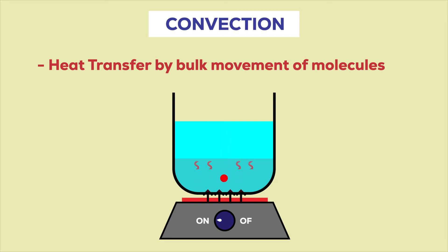And the colder, denser fluid replaces it. This process is repeated when this part also gets heated and rises up to be replaced by the colder upper layer. This is how the heat is transferred through convection.